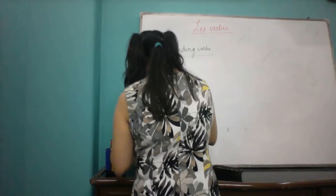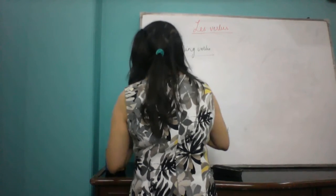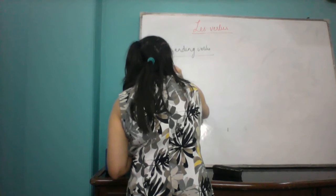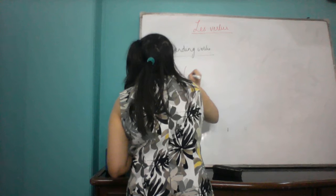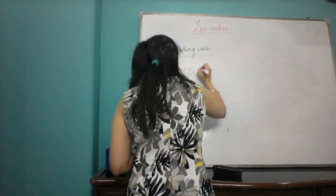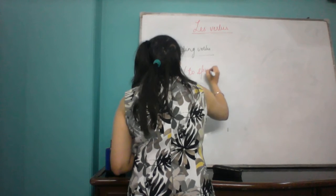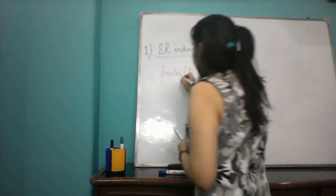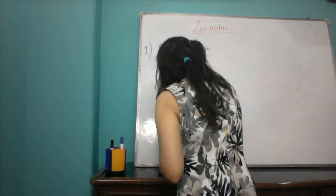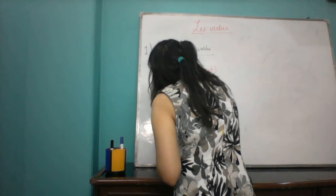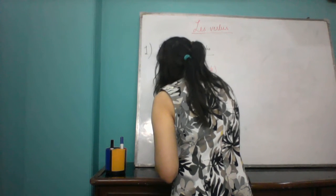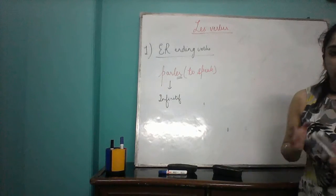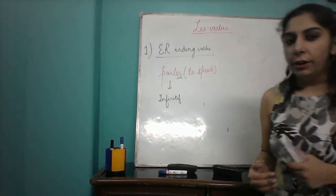For example, if we take the verb 'parler' — P-A-R-L-E-R — that means 'to speak'. Parler means to speak. When we have the verb with the ending ER, that's called the infinitive form of the verb. That means the verb is not yet conjugated according to the subject.